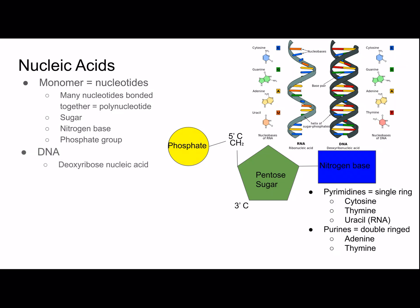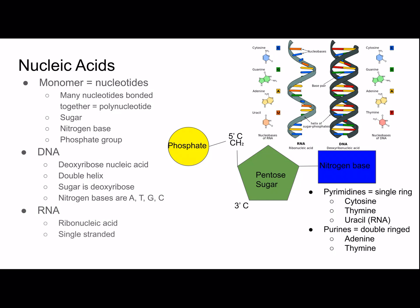DNA is deoxyribonucleic acid — you can see it in the picture as a double helix. The sugar in DNA is deoxyribose, and the nitrogen bases are adenine, thymine, guanine, and cytosine. RNA is different — it is ribonucleic acid and is single-stranded. The sugar is ribose, and the nitrogen bases are adenine, uracil, guanine, and cytosine. So there's no thymine in RNA, but there's uracil instead.